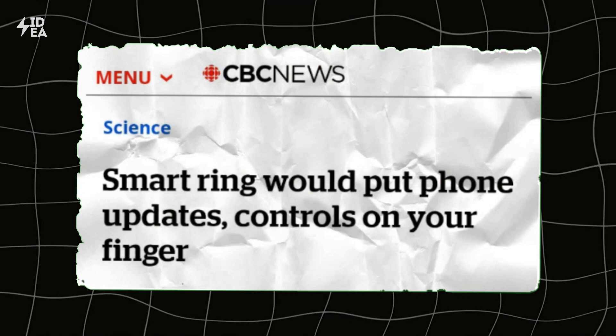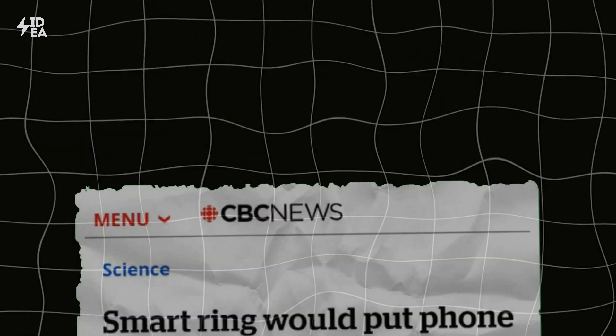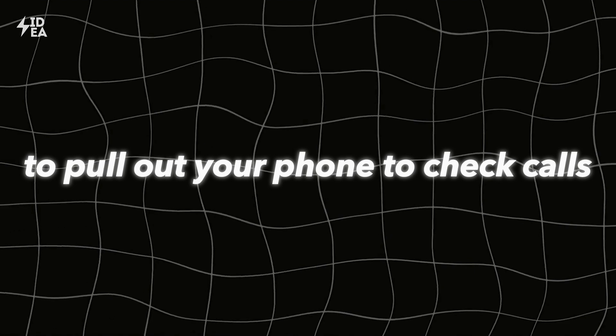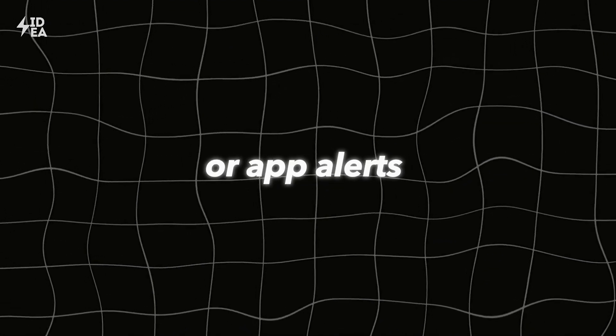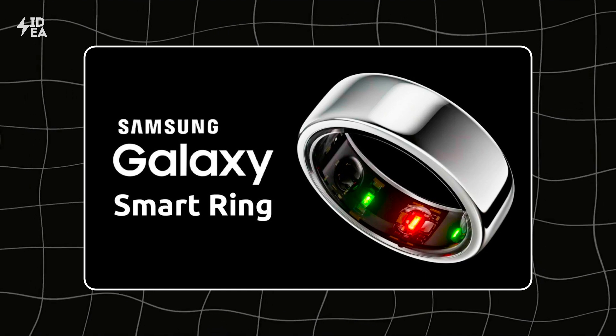What sets the Galaxy Ring apart is its ability to deliver instant notifications from your smartphone directly to your finger. This means you don't need to pull out your phone to check calls, messages, or app alerts. This seamless integration makes it easy to stay connected without disruption.